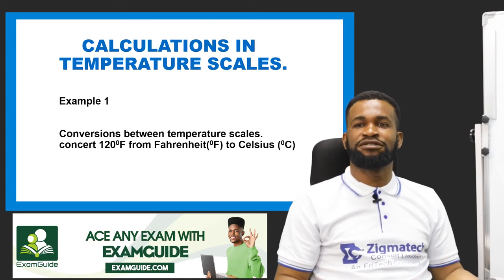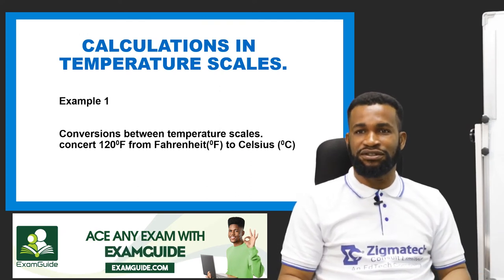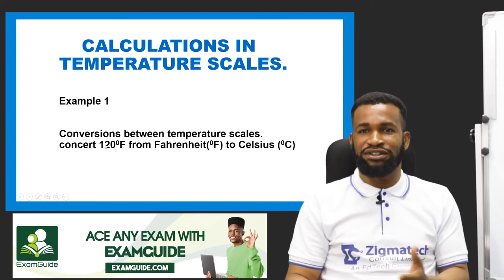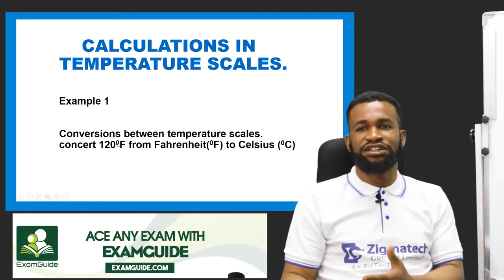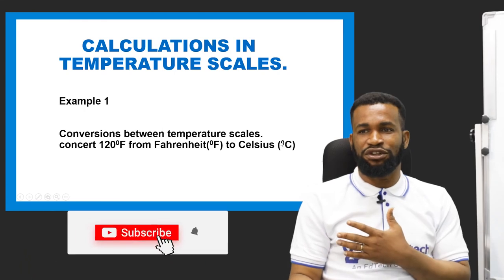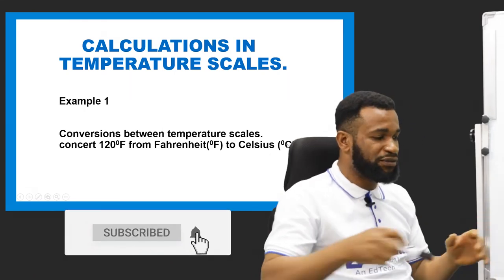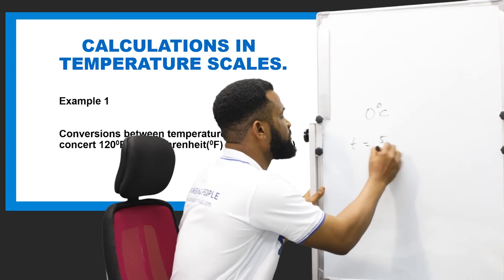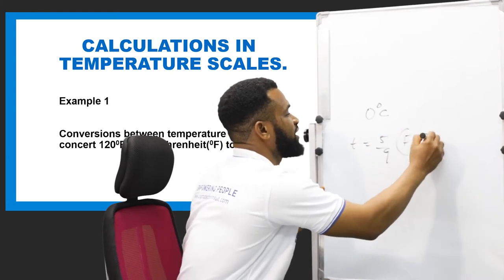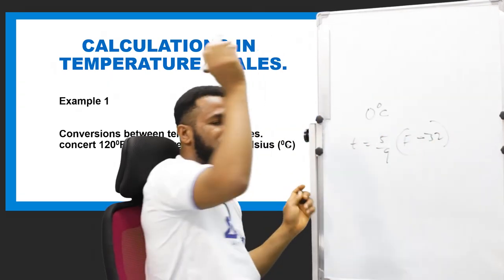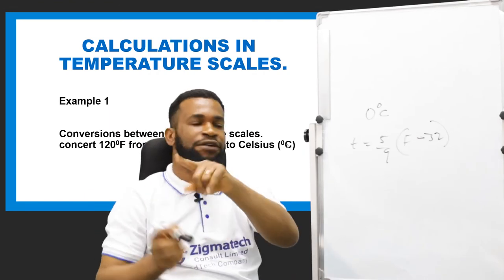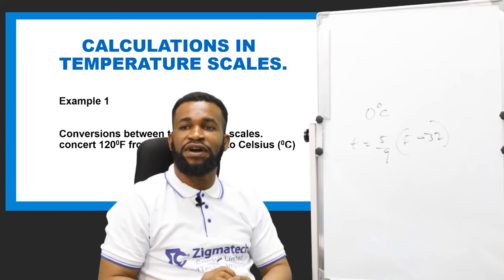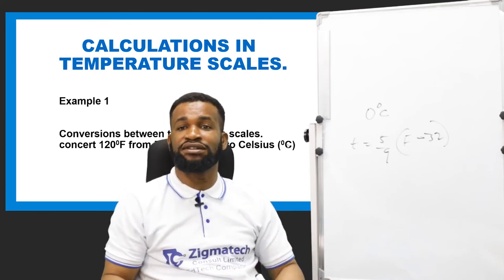Let's do some practice. Convert 120 degrees Fahrenheit to Celsius. Using the formula T = (5/9)(F − 32), substitute F = 120: T = (5/9)(120 − 32). Simplify this expression to get your answer.